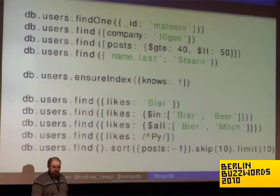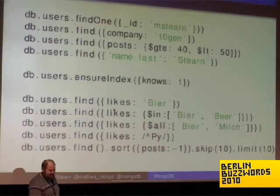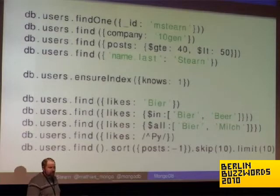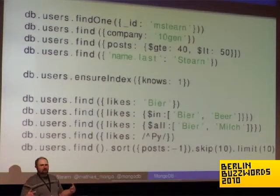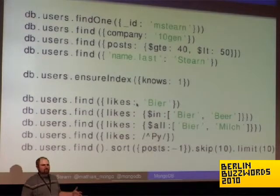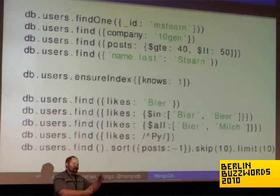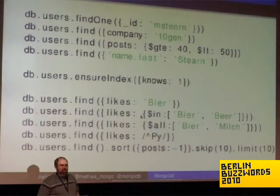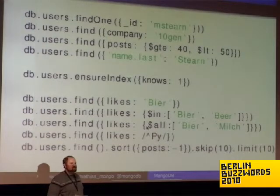Indexing is very similar to relational databases, but you can index arrays and subfields. For example, to index name.last, you just call ensureIndex on name.last. When you index an array — likes, for example — we insert one entry into the index for each item in the array. So to find everyone who likes beer, it's that simple: no joining a tags table. You can also do $in queries, which work on arrays — find me either spelling of beer. There are $all queries for everyone who likes both beer and milk.